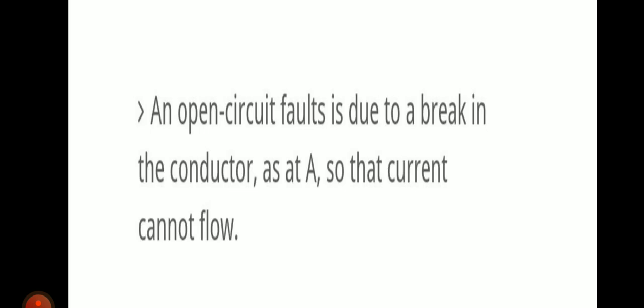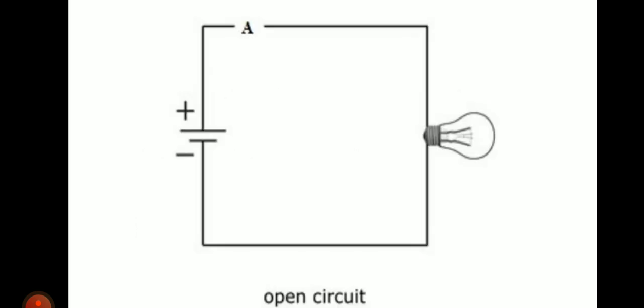The open circuit fault is due to a break in the conductor, so current will not flow. For example, in a circuit with a power source battery and a lamp as the load, if the conductor is broken, the circuit is not completed. So it is an open circuit fault.